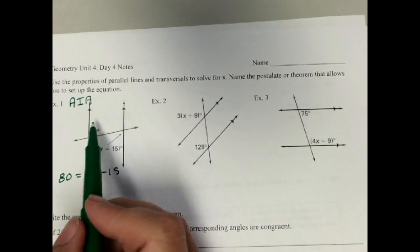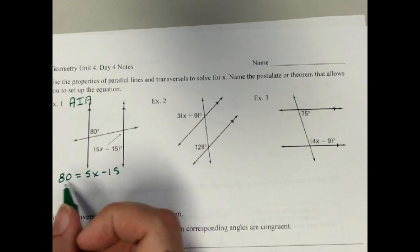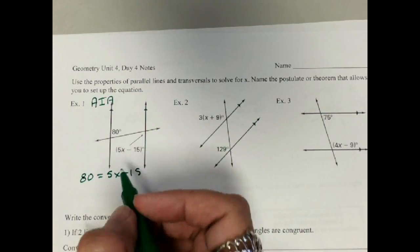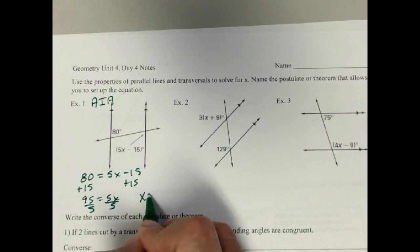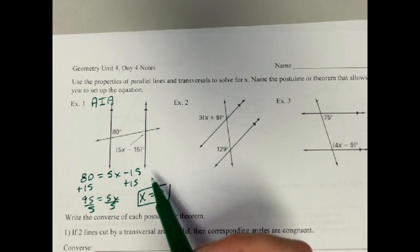So then all it is is a matter of you need to solve this algebra problem, which is actually even a pretty easy one. Solve that algebra problem, add the 15. We have 95 equals 5x. Divide both sides by 5, and we get x equals 19. If I want to check it, I just plug it back in here, 5 times 19, then minus 15, and make sure that it equals 80, and I'm done.